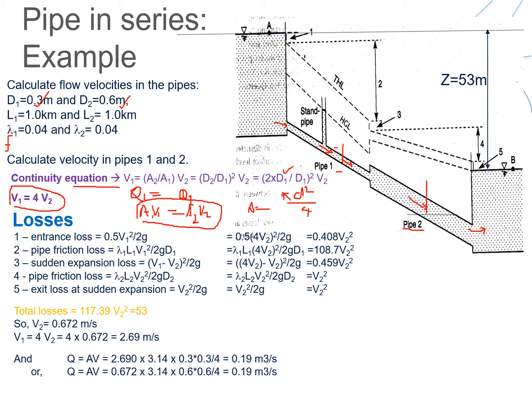Now we use the energy equation applied between two points. Point A is the water level at reservoir 1, and point B is the water level at reservoir 2. The difference in water level between the two reservoirs is 53 m, which represents the total loss of head. If there were no losses, the water levels would be the same, so the head loss equals 53 m.